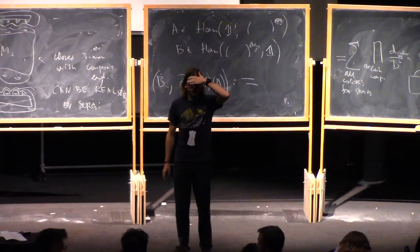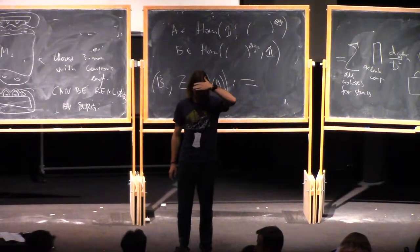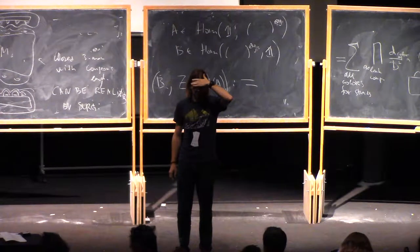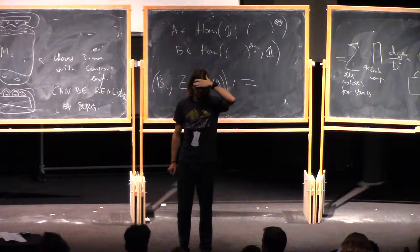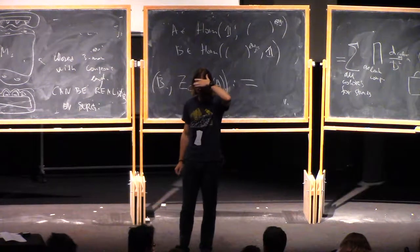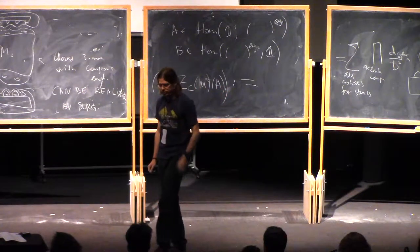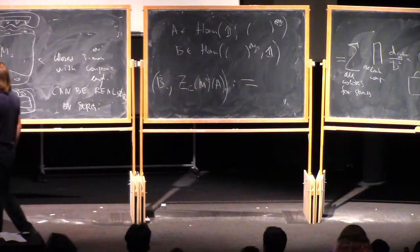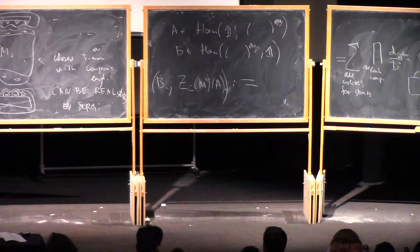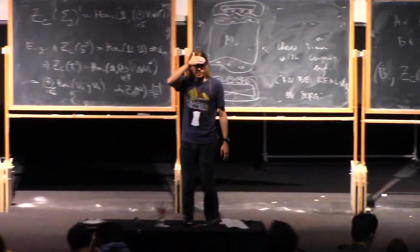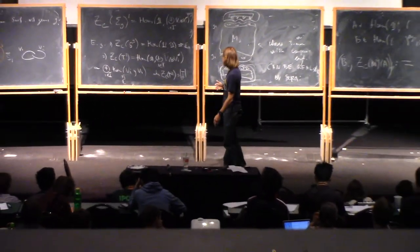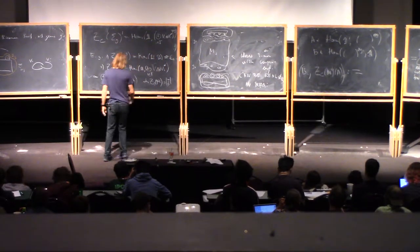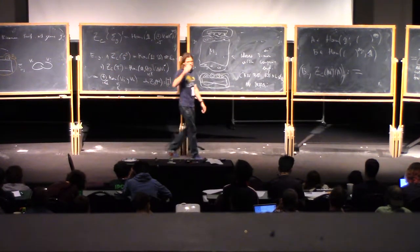Is it part of the axioms, sorry, does it fall out of the axioms of the CKFT that you can always express the space of states on an n-1 dimensional manifold by a hom from identity object? I don't think this is a, there is, I mean, this is a general state. Well, yeah, I don't think.